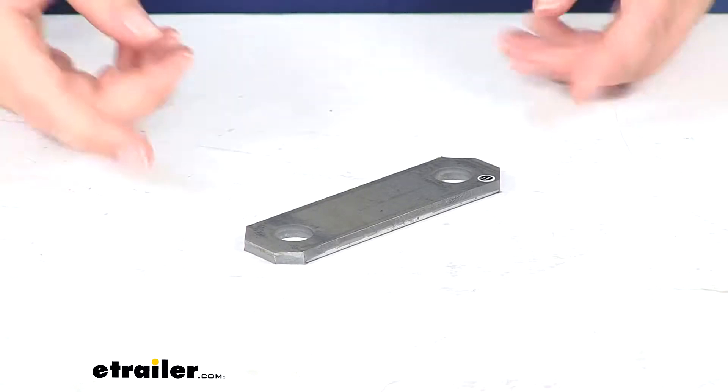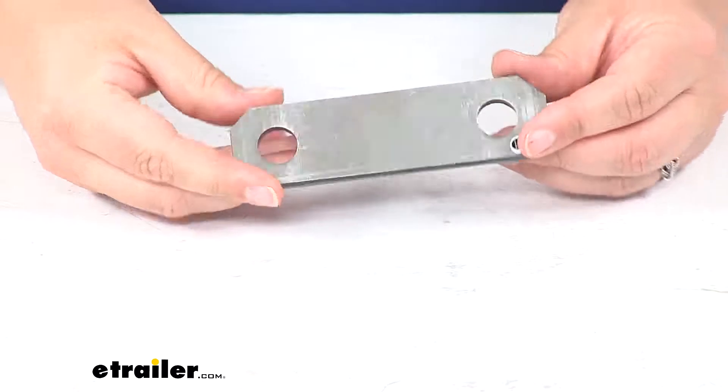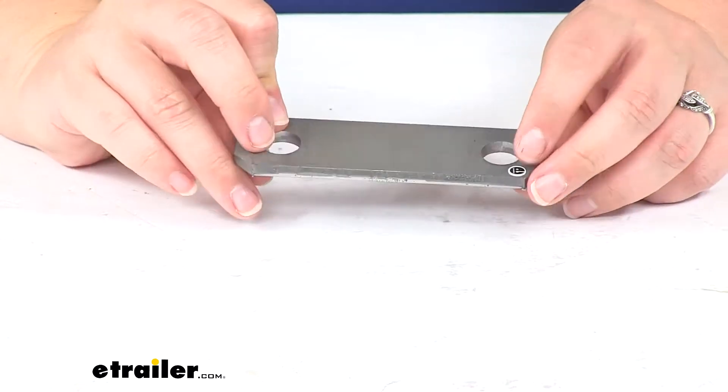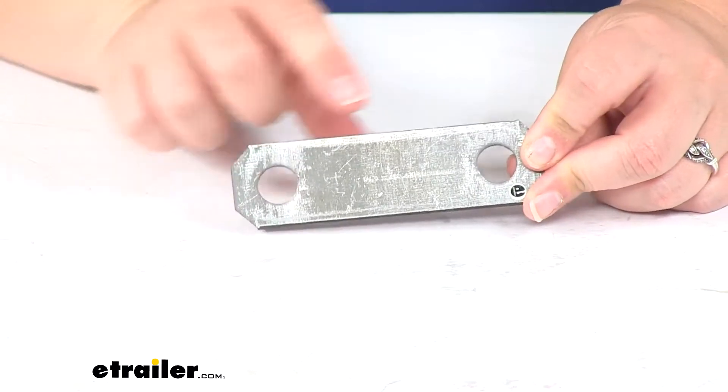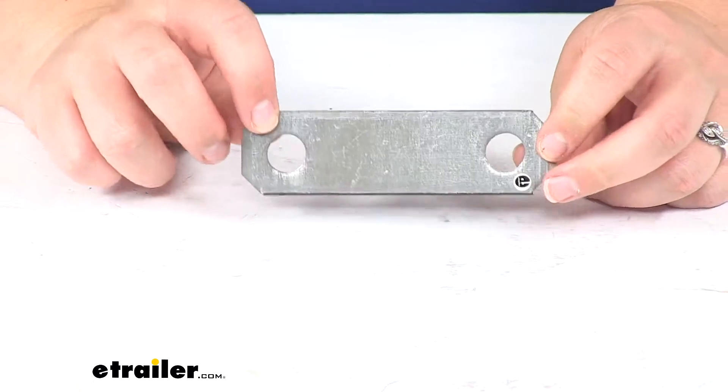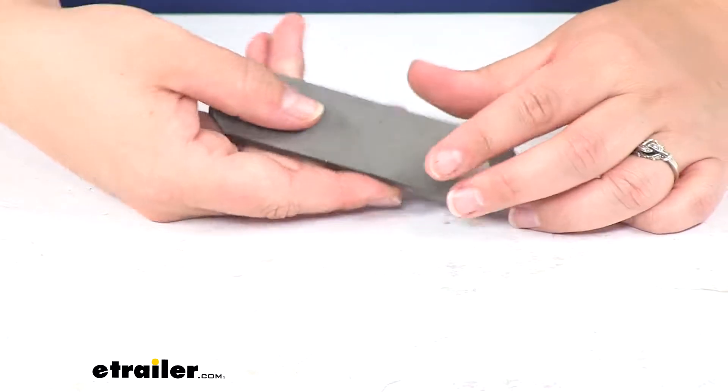Today we'll be taking a look at the shackle strap. This is going to be the connection point between your double eye leaf spring to the rear hanger on your trailer or to the equalizer on your suspension system.